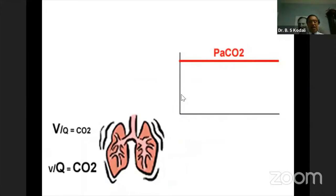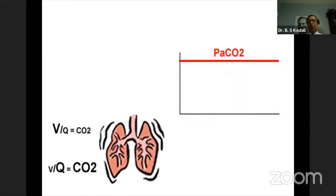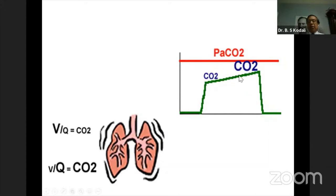When a lung with more CO2 at the bottom than the top begins to expire, it gives you the classic shape of capnogram seen in clinical practice. The point of explaining this is that when you look at the alveolar plateau, it is not simply a flat line — just by looking at the capnogram, you can know exactly what is happening within the lung in terms of ventilation-perfusion status.